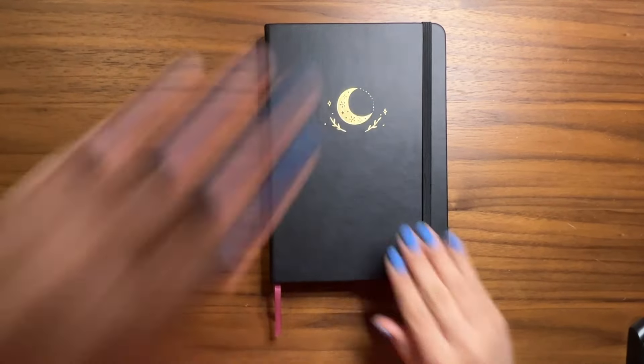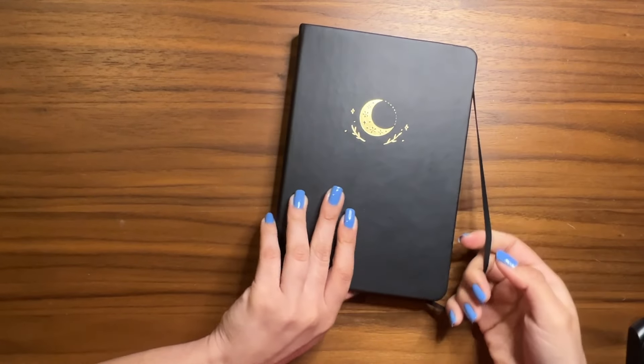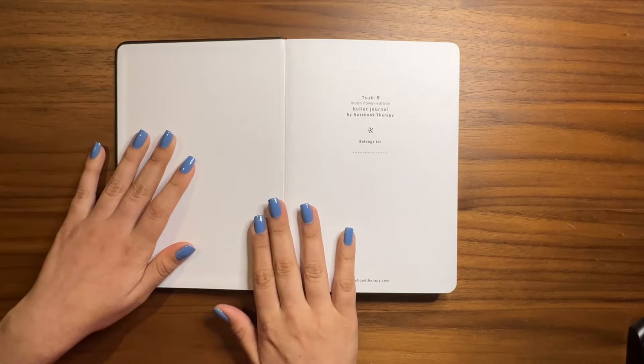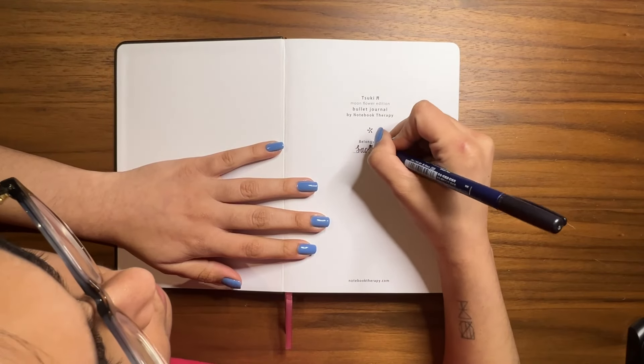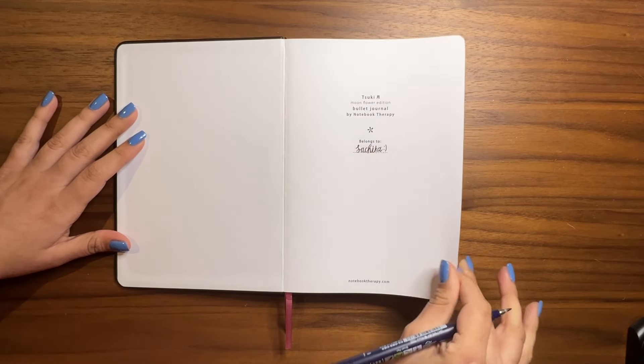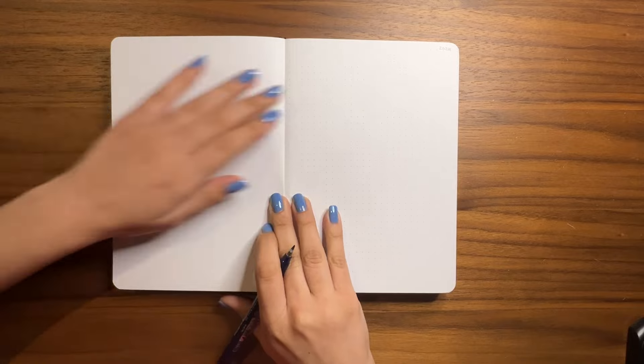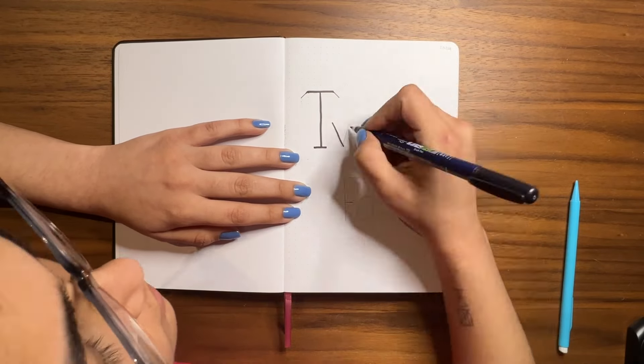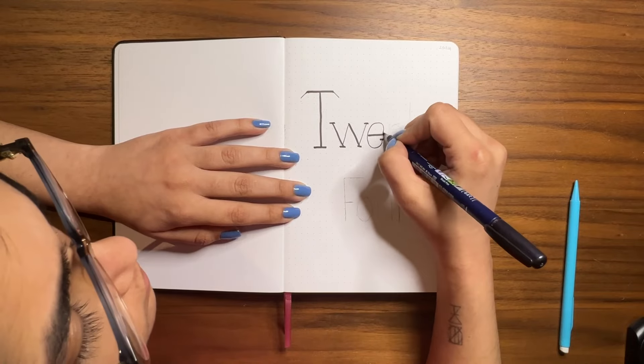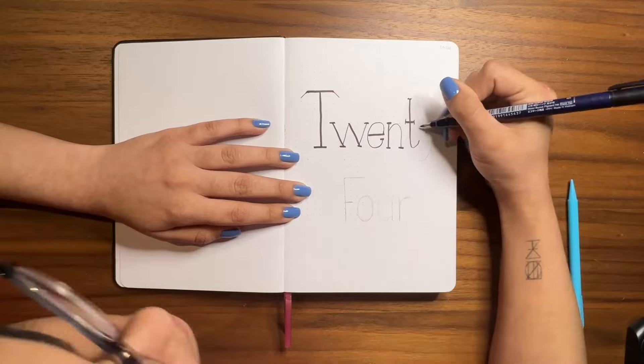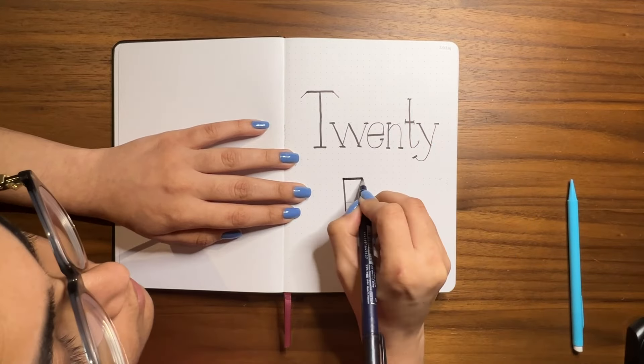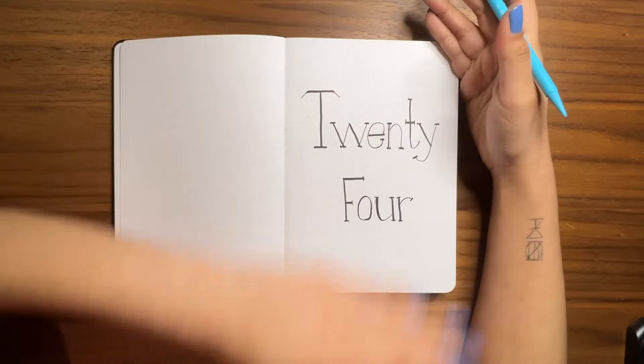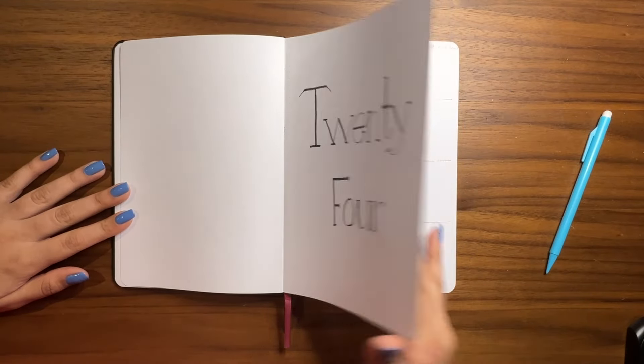So to begin with, I decided to set up my January setup. This is the new journal. I got it from Notebook Therapy and I think Notebook Therapy works really great for me just because it's faux leather and it's not linen. Linen really catches the dust a lot, which gets really irritating.